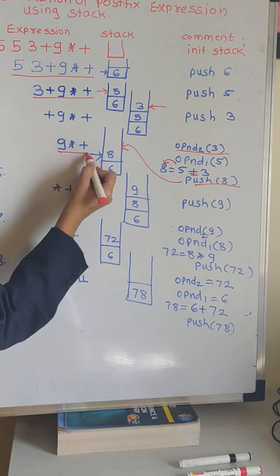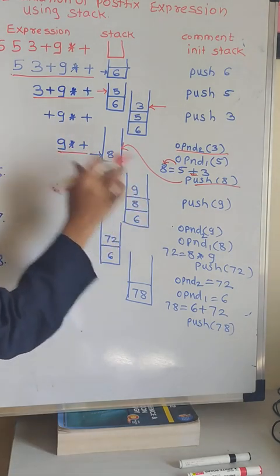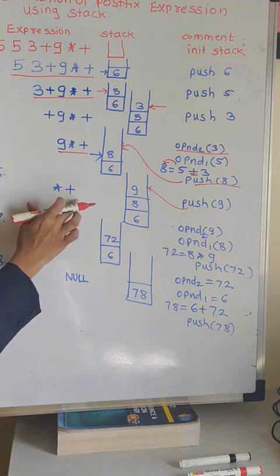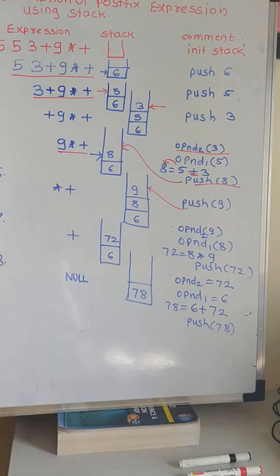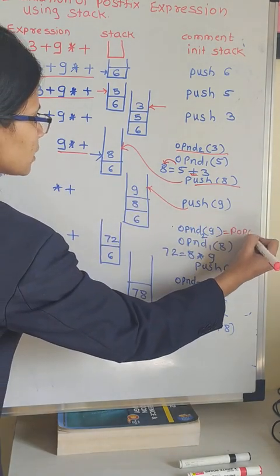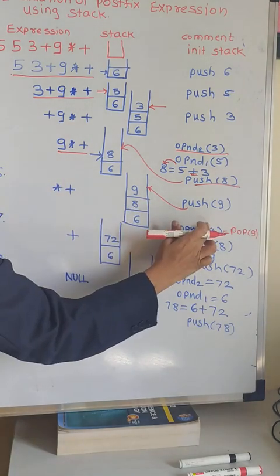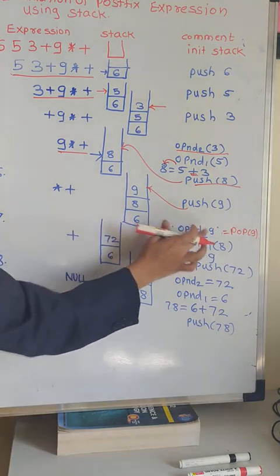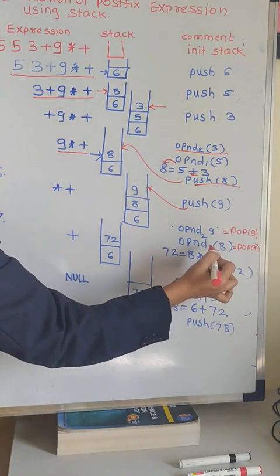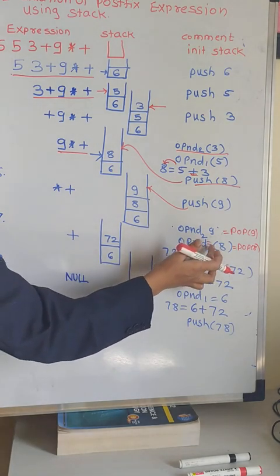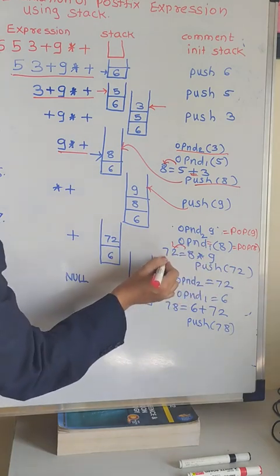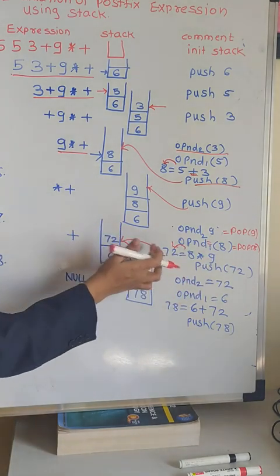Now, the remaining is 9, multiplication, and plus. So 9 is an operand — directly push 9 on your stack. Write: push 9. Then, remaining is multiplication and plus. Again there is an operator, so pop the 2 elements. First pop 9 and store it as operand 2. Then pop 8 and store it as operand 1. Multiply operand 1 into operand 2: 8 into 9 is 72. Push this 72 inside your stack.